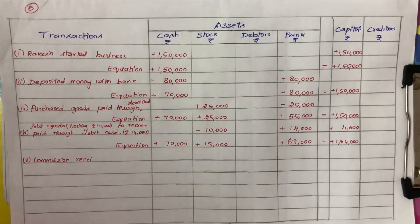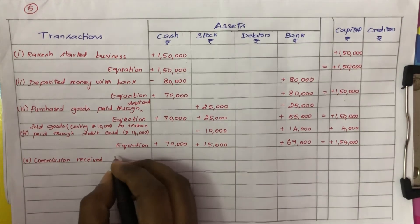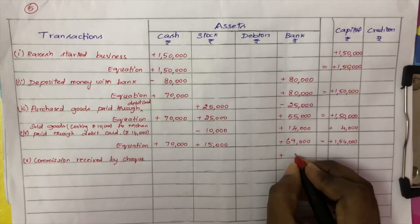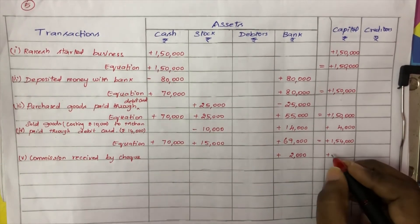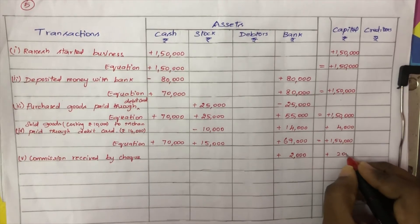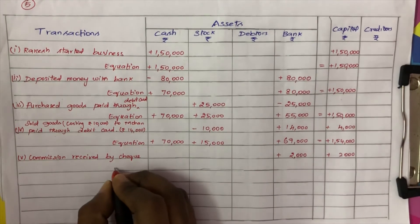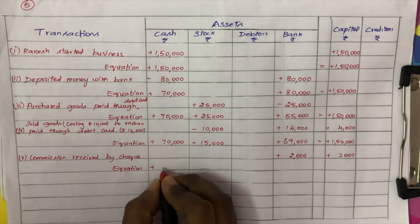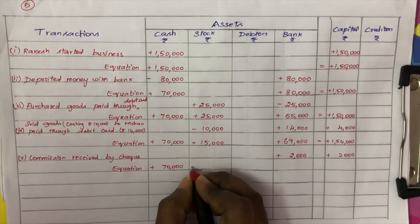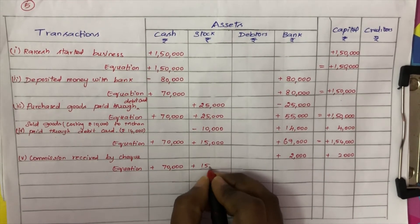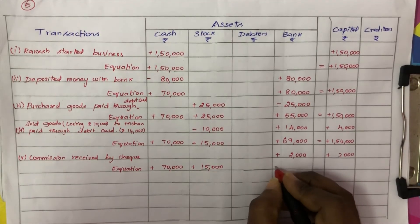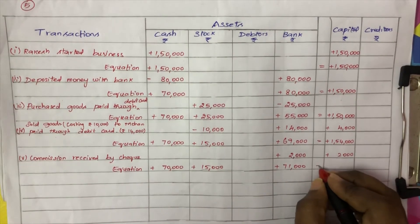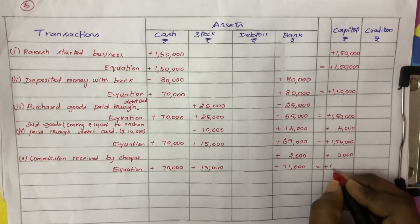Fifth transaction: commission received by cheque and deposited in the bank Rs. 2,000. Bank increases by plus Rs. 2,000. Commission income is excess profit, so capital increases by Rs. 2,000. Updated equation: cash Rs. 70,000, stock Rs. 15,000, bank Rs. 71,000, equal to capital Rs. 1,56,000.